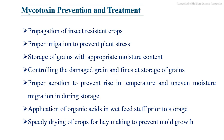Mycotoxin prevention strategies include: propagation of insect-resistant crops, proper irrigation to prevent plant stress, storage of grains with appropriate moisture content, controlling damaged grain and fines at storage, proper aeration to prevent rise in temperature and uneven moisture migration during storage, application of organic acids to wet feedstuffs prior to storage, and speedy drying of crops for hay making to prevent mold growth.